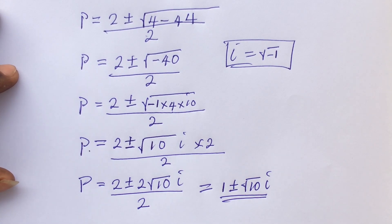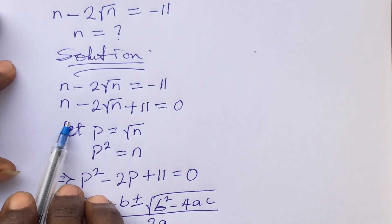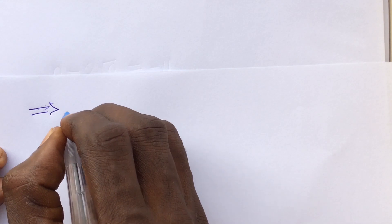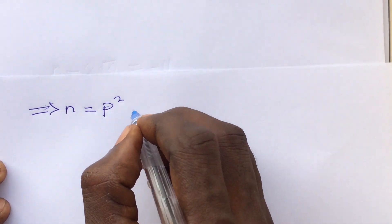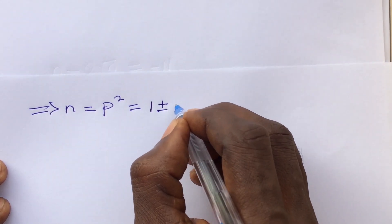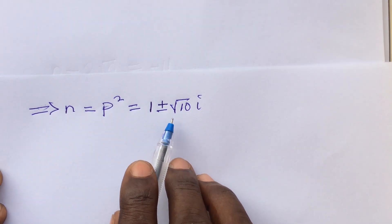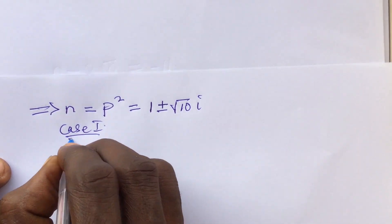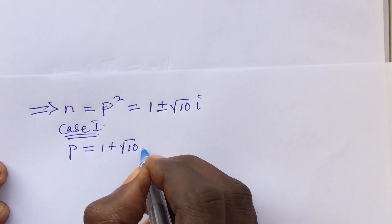Since p is not our original variable, we return to where we said let p equal the square root of n, which means n equals p squared. Our p was found to be 1 plus or minus root 10 times i. We have two solutions. Case one: p equals 1 plus root 10 times i.